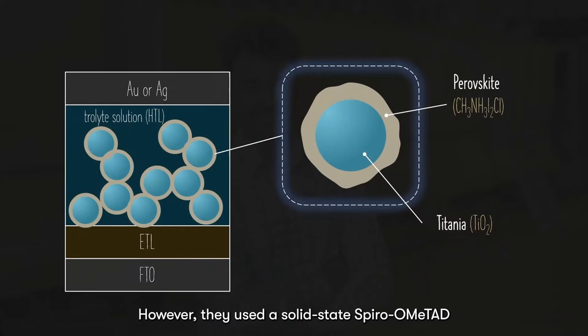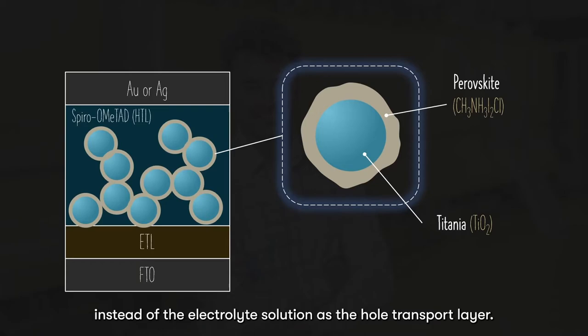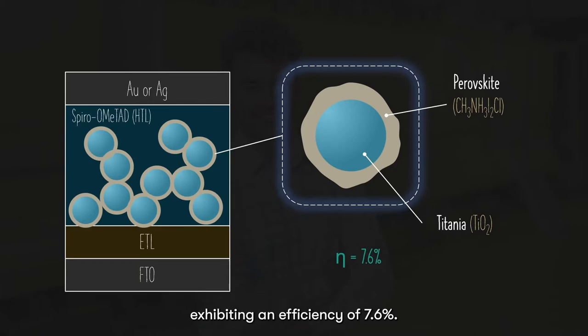In 2012, Professor Henry Snaith from the University of Oxford worked with Tom Miyazaka to develop a similar perovskite-based solar cell. However, they used a solid-state spiro-OMeTAD instead of the electrolyte solution as their hole transport layer. This immediately solves the issue of perovskite dissolving into the electrolyte solution, exhibiting an efficiency of 7.6%.